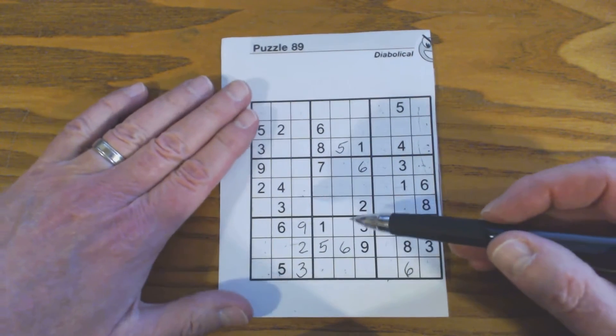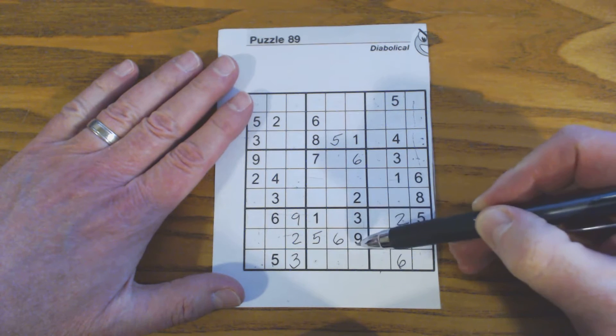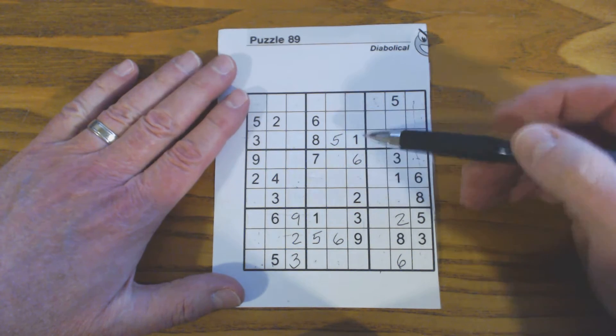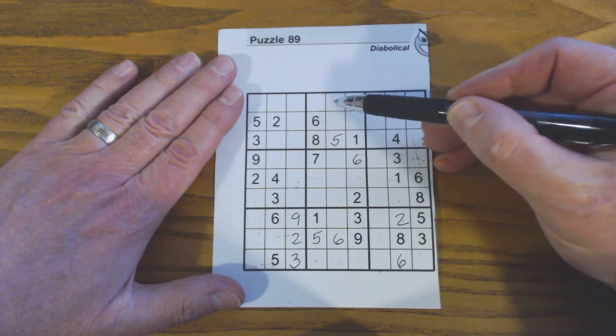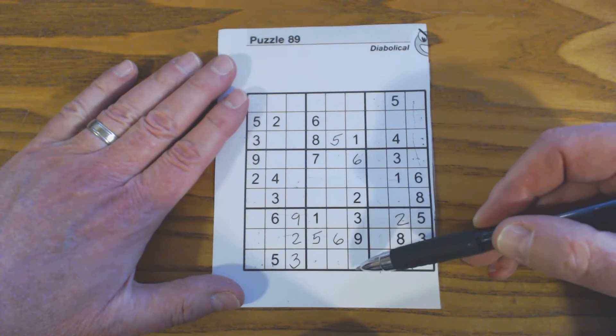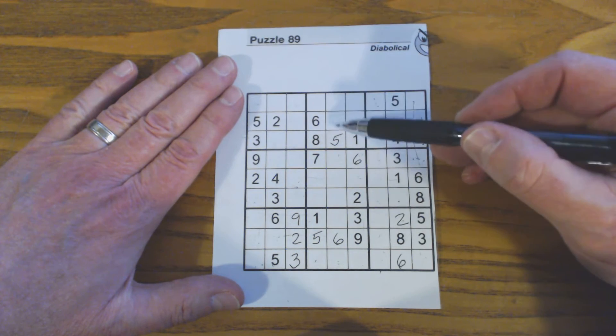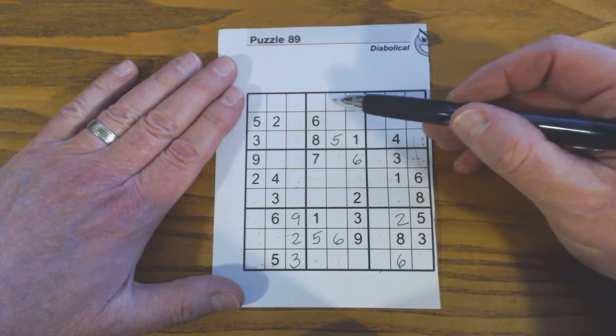So first of all, see that there's a 2, 3, and 9 in this column here, and there are only three cells in this square that are outside of this column that aren't filled in yet, and so those three numbers, 2, 3, and 9 will fit right here.